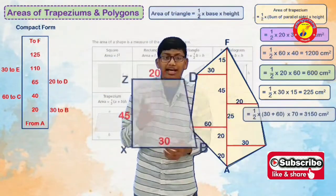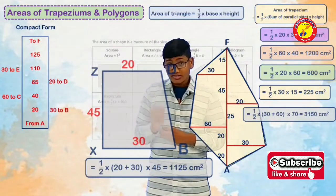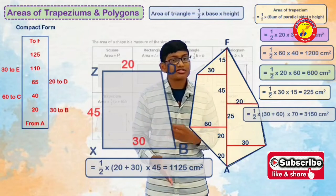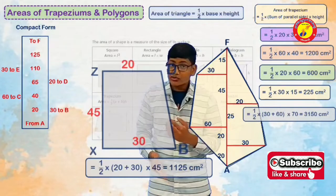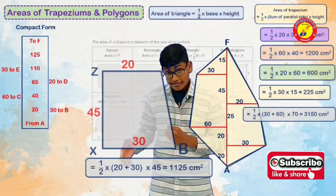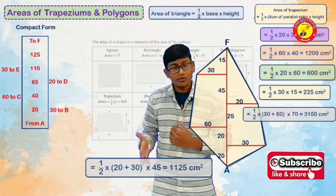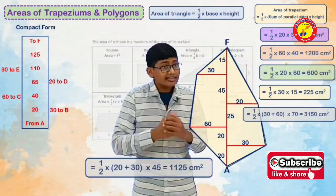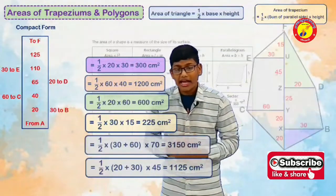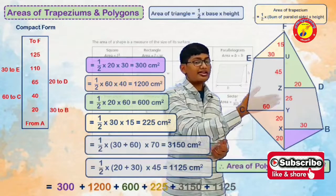Now we will go for the last part, that is the second trapezium. Half into sum of parallel sides into height — half into 30 plus 20, we get 50 cm, and height 45 cm. Half into 50 into 45. After calculation, we will get 1125 cm square. Now I will add all these areas and I will get 6600 cm square.